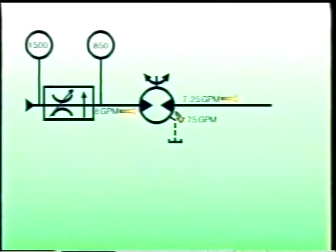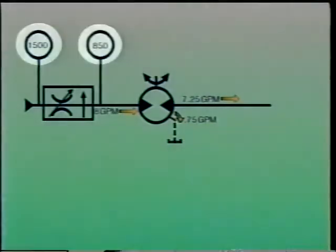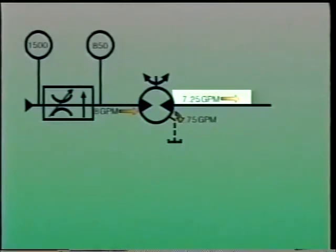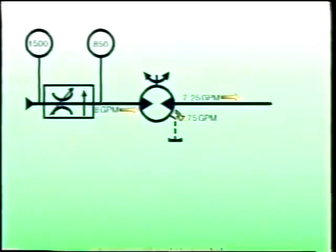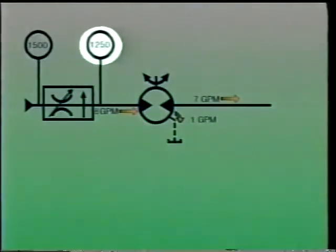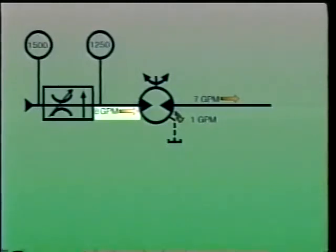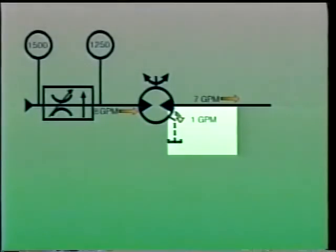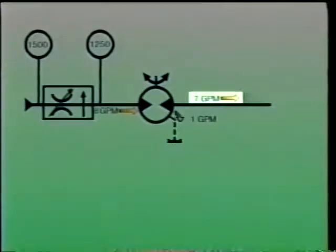Meter in circuits do not work well for similar reasons. For example, a valve in this circuit reduces the motor inlet pressure from 1500 psi to 850 psi. If leakage from the motor is three quarters of a gallon per minute, then the speed of the motor will be based on seven and one quarter gallons per minute. If the load pressure on the motor increases to 1250 psi, the valve will maintain the same flow rate into the motor — eight gallons per minute — however, since pressure inside the motor will be higher, leakage will be greater, perhaps as high as one gallon per minute. As a result, only seven gallons per minute pass through the motor and it will slow down.